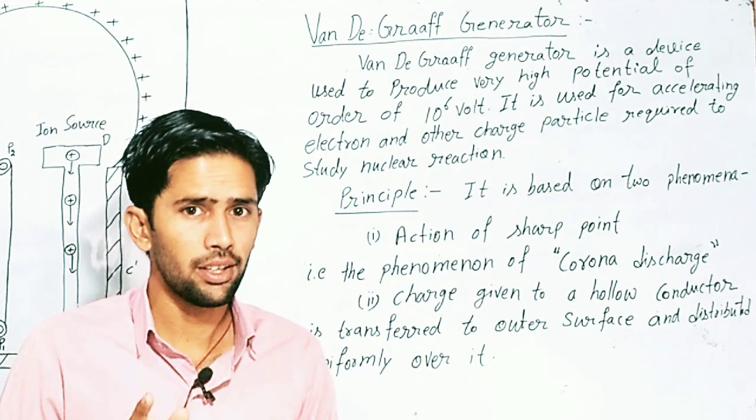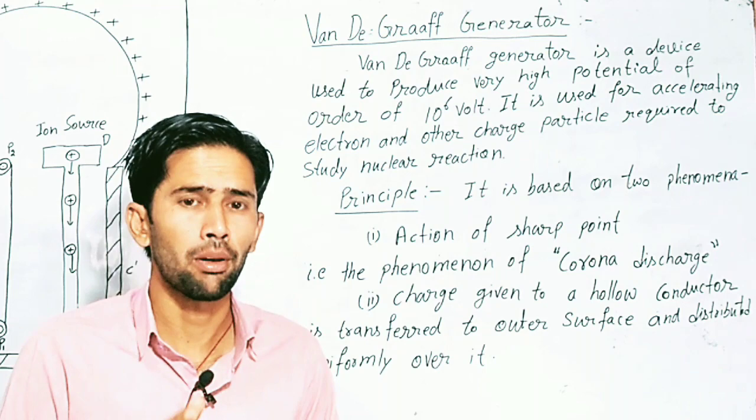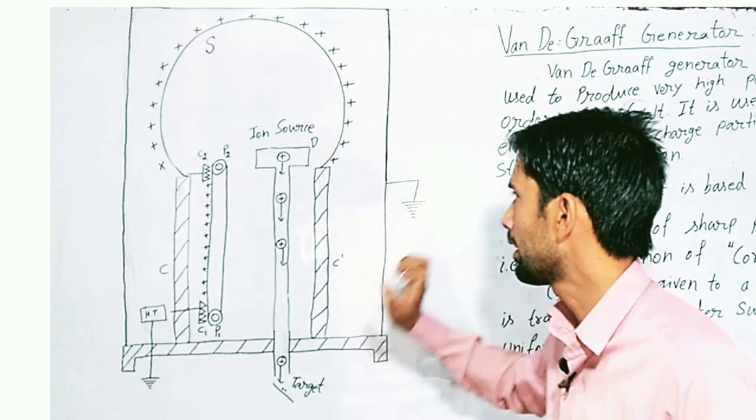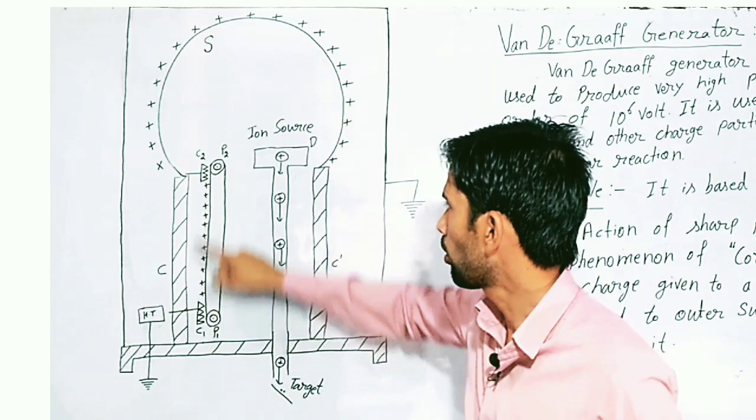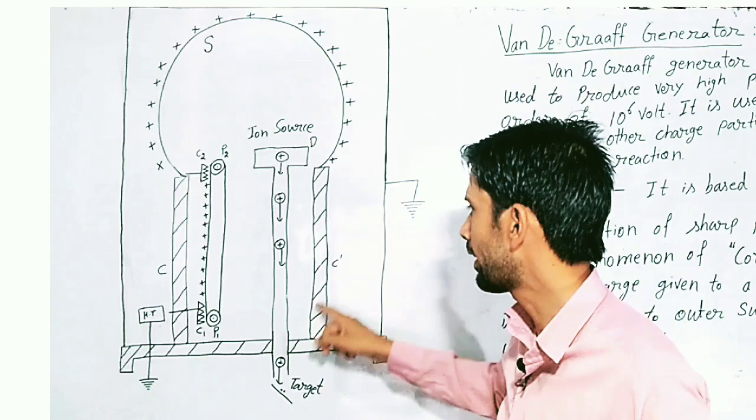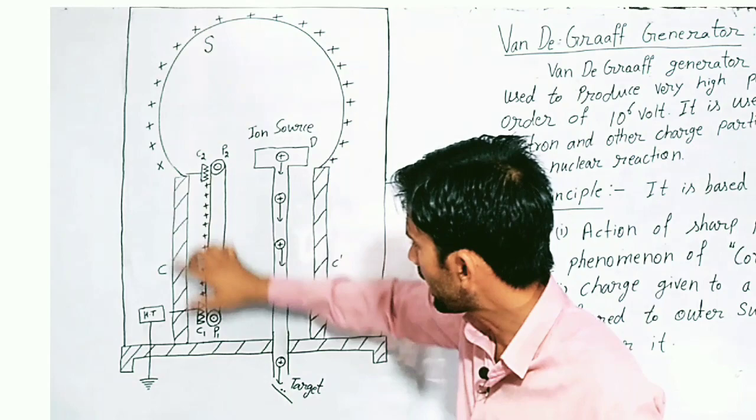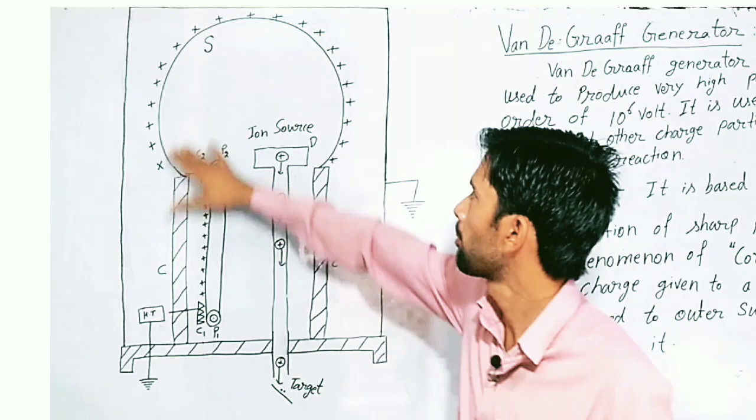Second, if you have considered a sphere, then the charge of the entire sphere is distributed uniformly. So if you look at this diagram, you can see the sphere. This is a sphere S, and we have placed this sphere on an insulating column. You can see this sphere here.